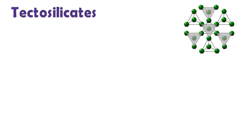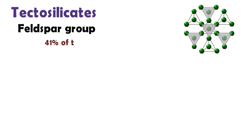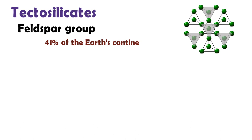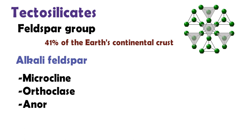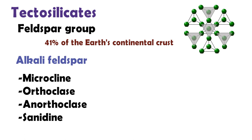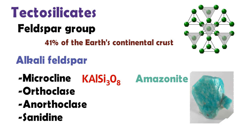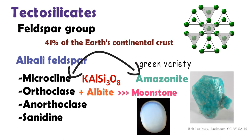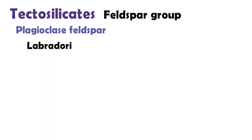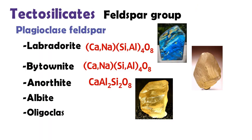As tectosilicate, feldspar is a group of rock-forming tectosilicate minerals that make up about 41% of the Earth's continental crust. Microcline, orthoclase, anorthoclase, and sanidine are alkali feldspar. Amazonite is a green variety of microcline. Intergrowths of orthoclase and albite are called moonstone. In the plagioclase feldspar group, there are labradorite, bytownite, anorthite, albite, and oligoclase.